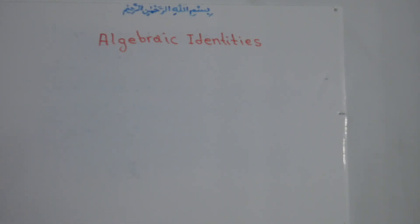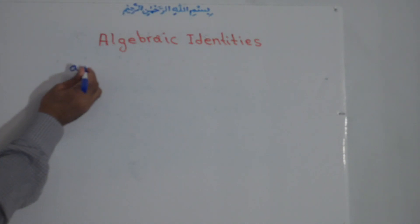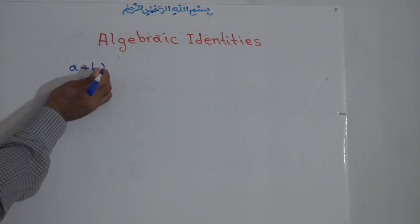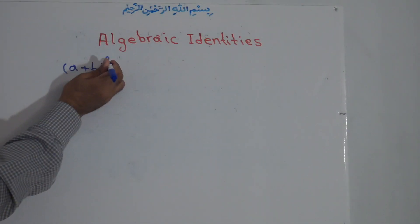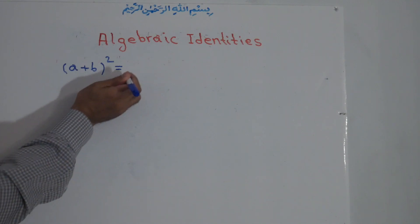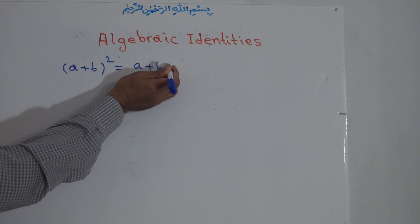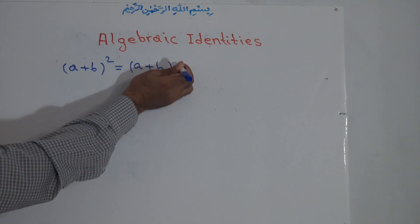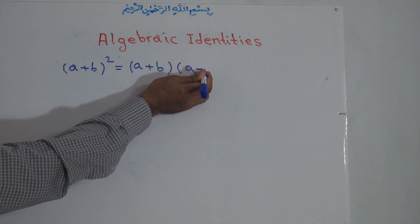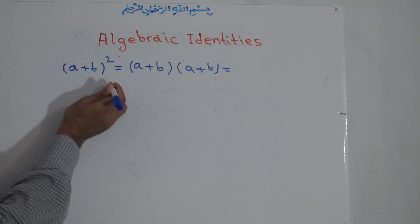For example, there is a plus b, all to the power of 2, or squared. This is like the multiplication of two binomials and it is one of the identities. So a plus b to the power of 2 means a plus b times a plus b. Now from multiplying two binomials, we know how to proceed.